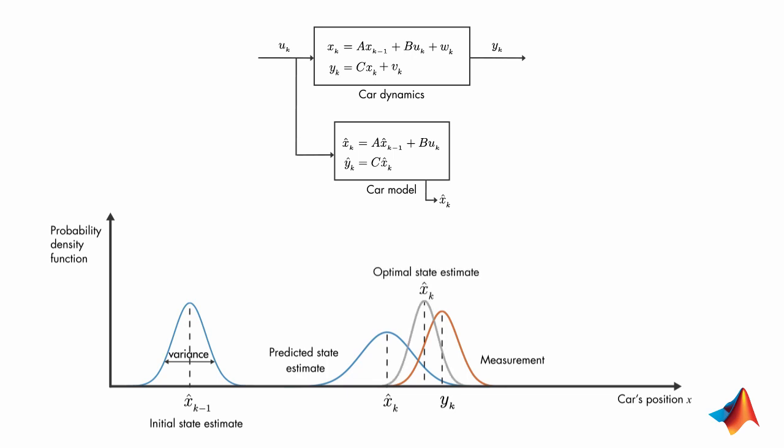The resulting product is also a Gaussian function. This estimate has a smaller variance than either of the previous estimates. And the mean of this probability-dense function gives us the optimal estimate of the car's position. This is the basic idea behind Kalman filters.